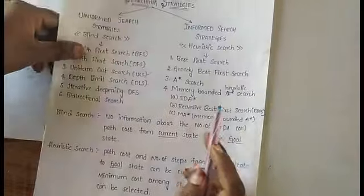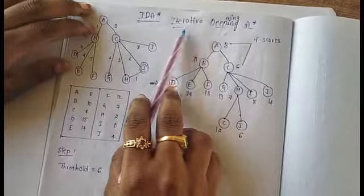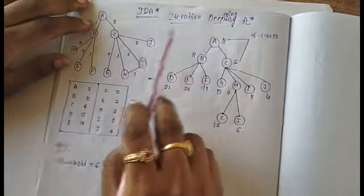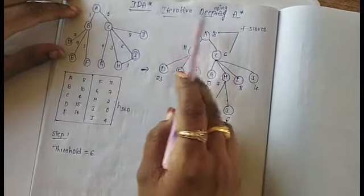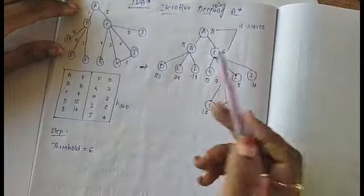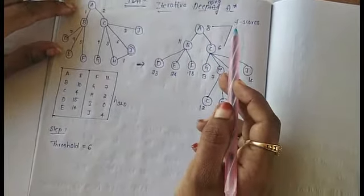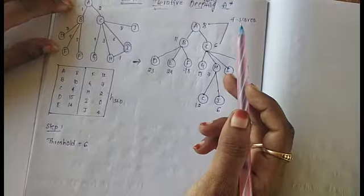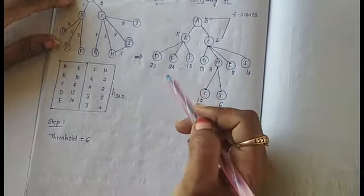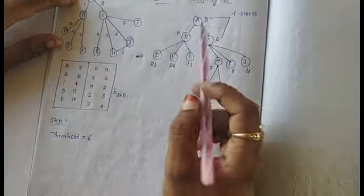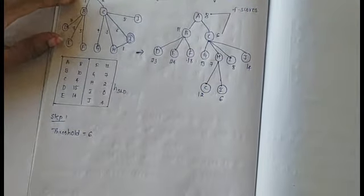Coming to IDA* — IDA* stands for Iterative Deepening A-Star. What we do is add the A-Star search algorithm to the iterative deepening concept. We do this because A* has a drawback of high memory requirements, so we use iterative deepening A-Star to address that.